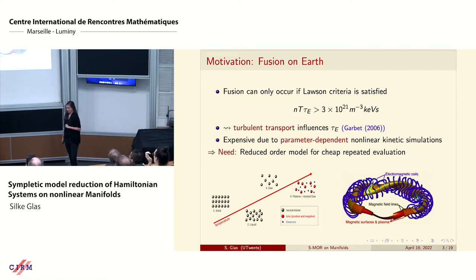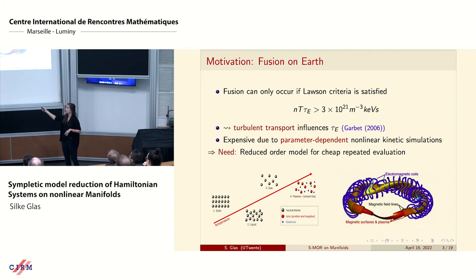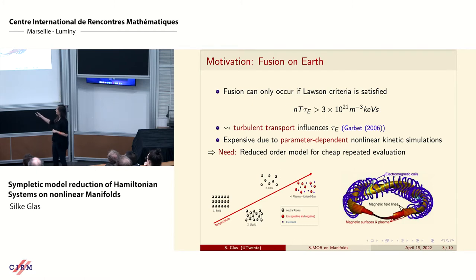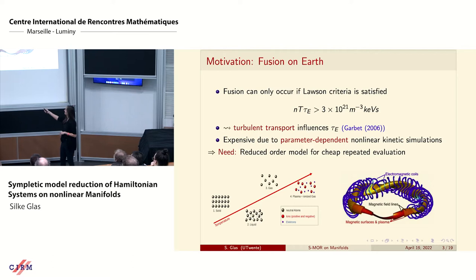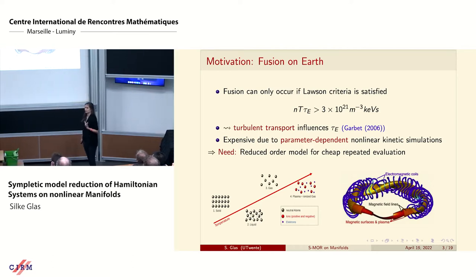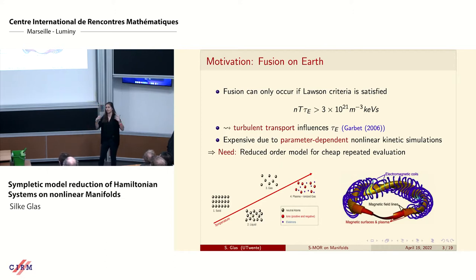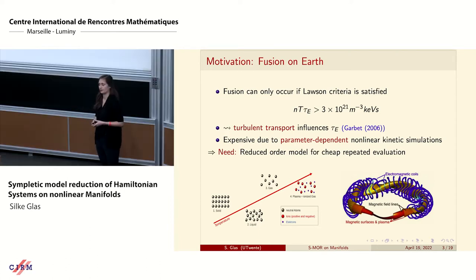Bringing fusion down to Earth comes with restrictions. Fusion on Earth can only occur if we satisfy the so-called Lawson criterion, which is a triple product of particle density, temperature — which needs to be very hot — and the confinement time, and this triple product needs to be above a certain threshold. We also have turbulent transport, which are instabilities inside the plasma that impact confinement. In order to optimize for a future device — the successor of ITER — we need to solve kinetic equations that are parameter dependent.